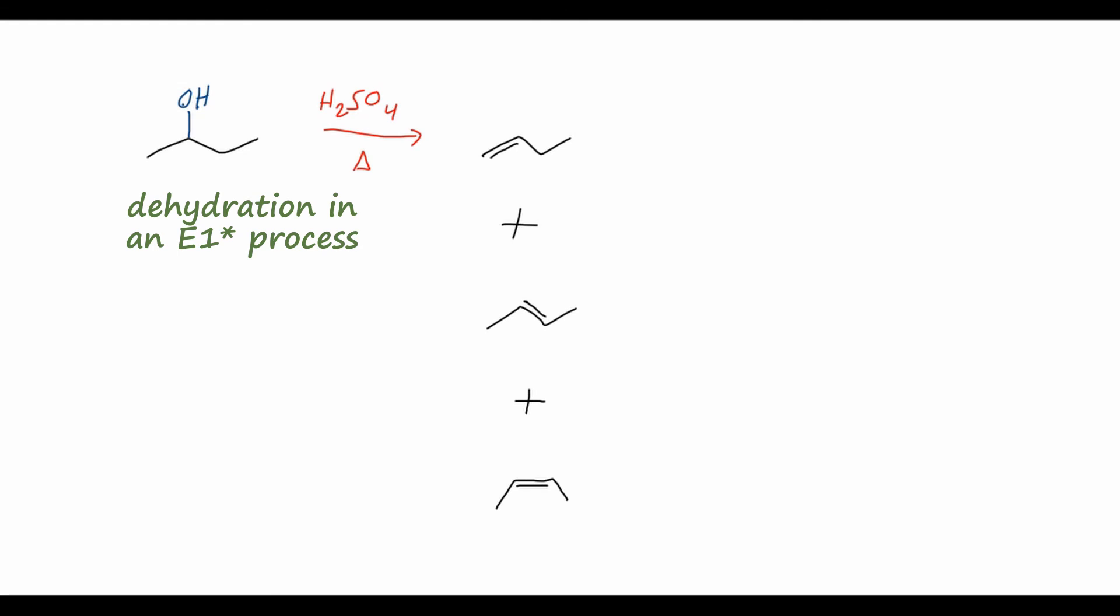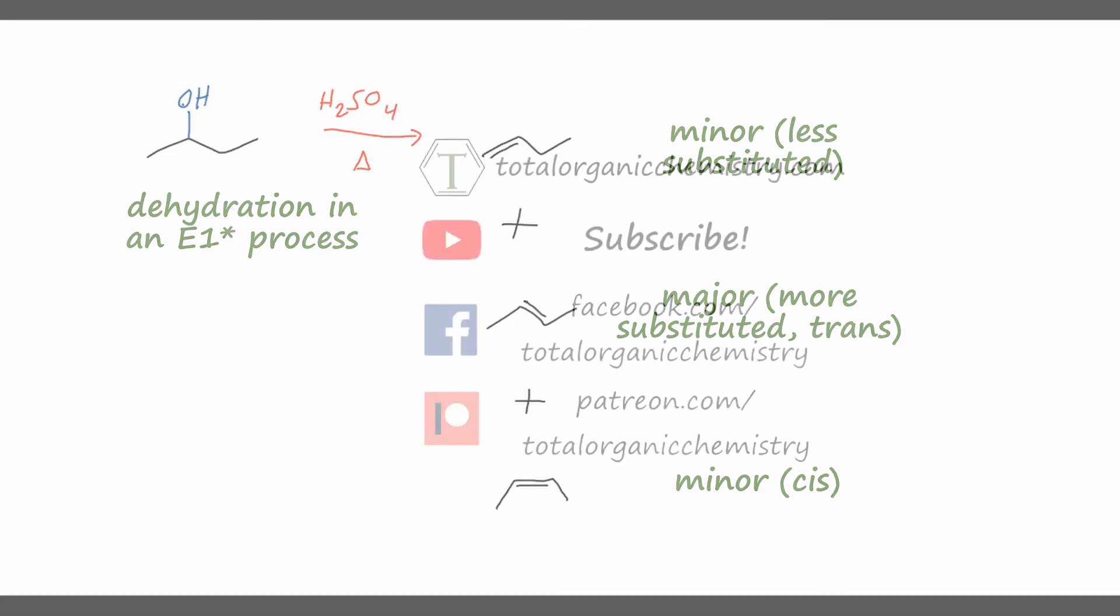And just like we talked about, the major product here will probably be the middle product, where we have the more substituted alkene, so it's disubstituted, and it is also trans stereochemistry, so we have pretty negligible steric hindrance. The other two products will be minor. The first one, because it is less substituted, so less thermodynamically stable, and the last product is minor, because it is a cis isomer, and that's going to be more sterically hindered than the trans isomer.